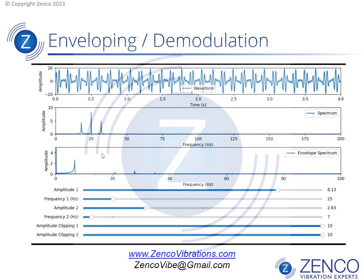This is called an envelope spectrum, or a demodulated spectrum. What this does is it returns the modulating frequency. So the modulating frequency in this case right now is at 7 hertz, and what we see here is the peak at 7 hertz. That's telling us what's doing the modulation — that's what demodulation does.